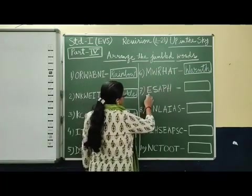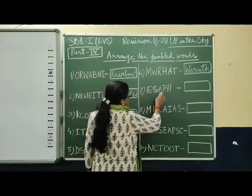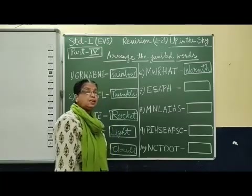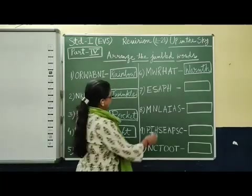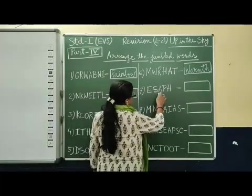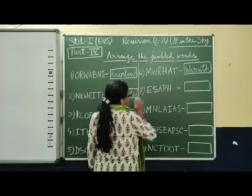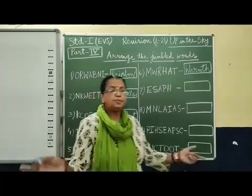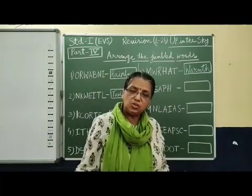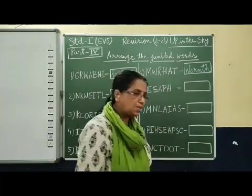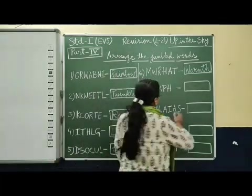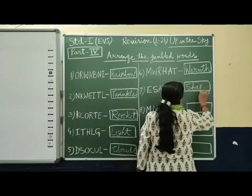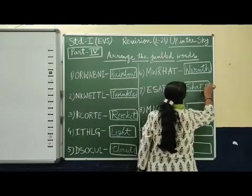Next: E, S, A, P, H. Very easy spelling. S, H, A, P, E — Shape. The shape of the moon keeps changing always. Shape: S, H, A, P, E.